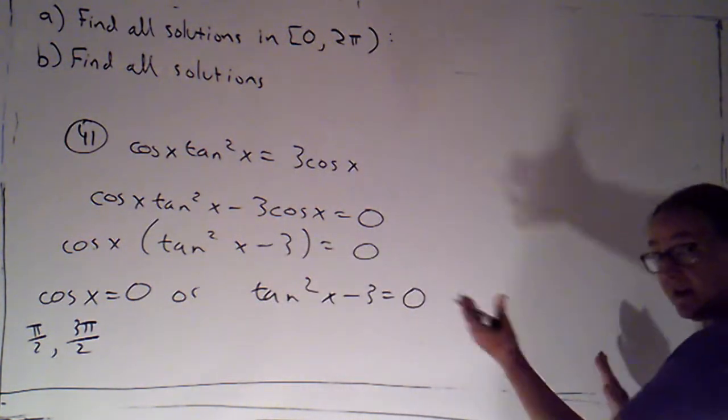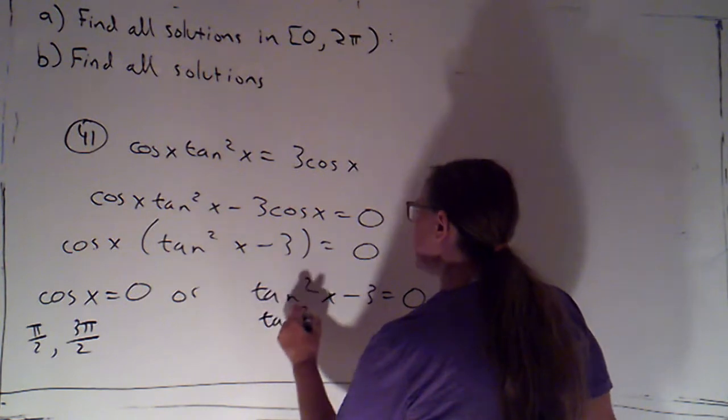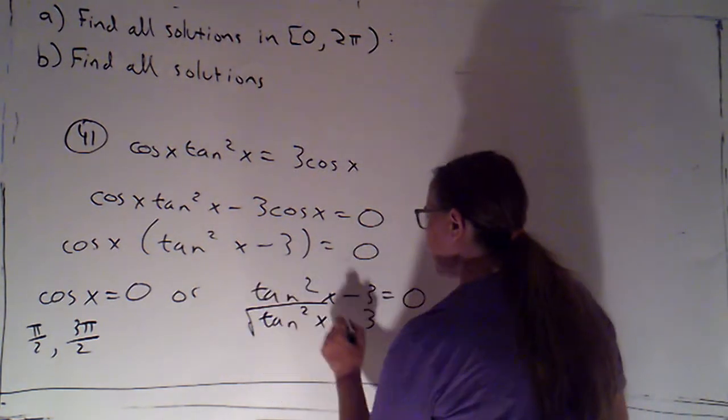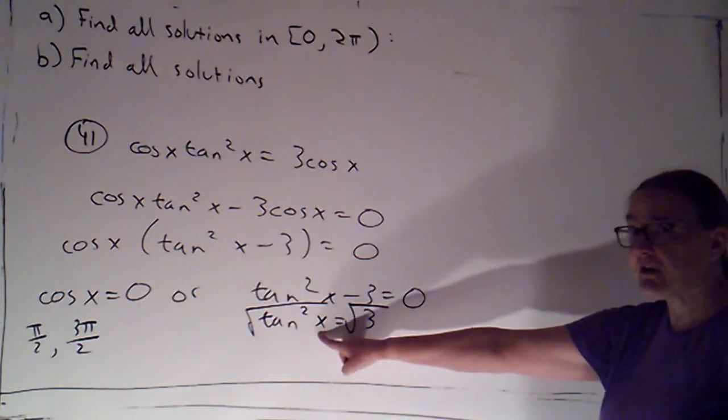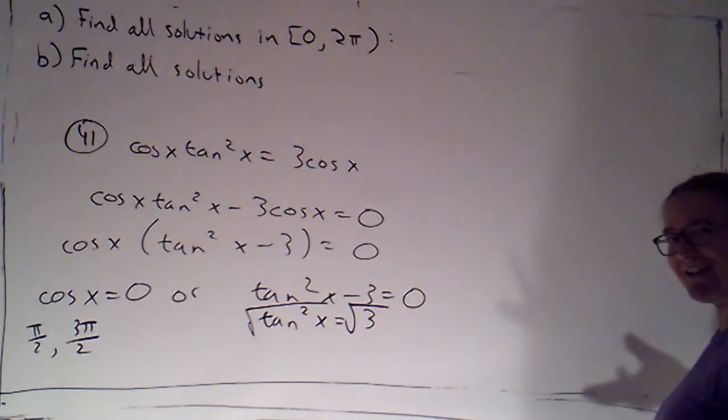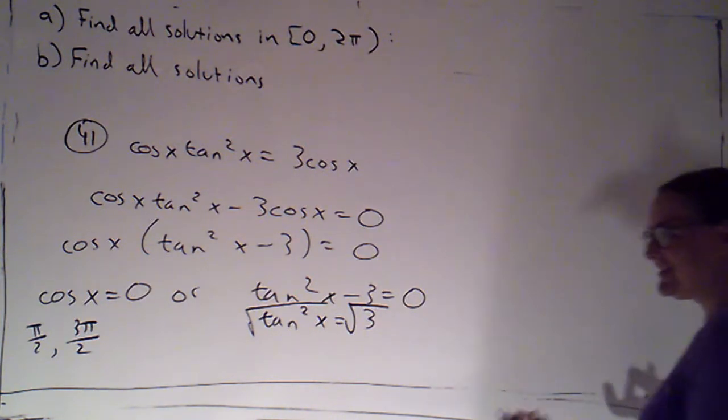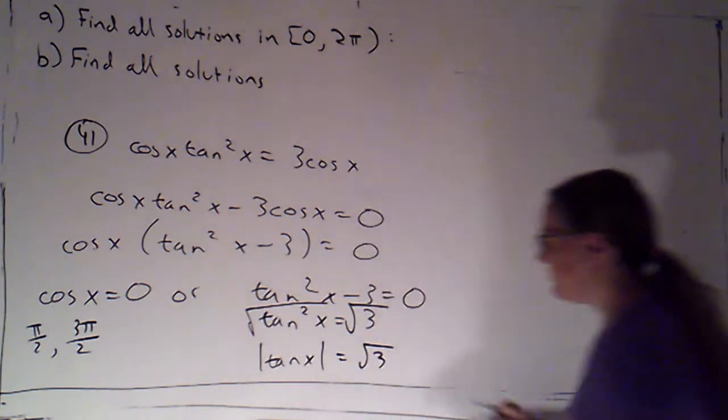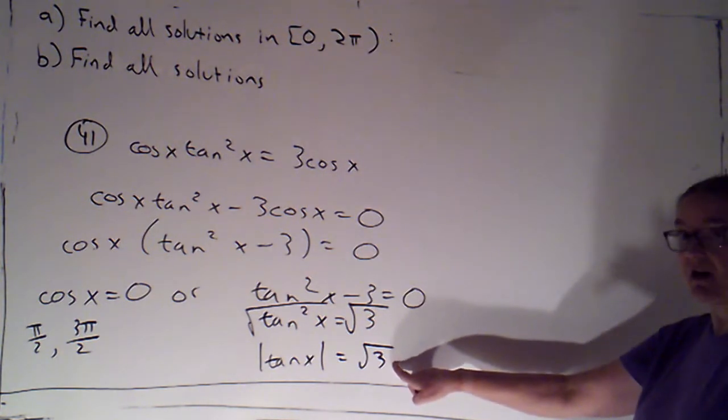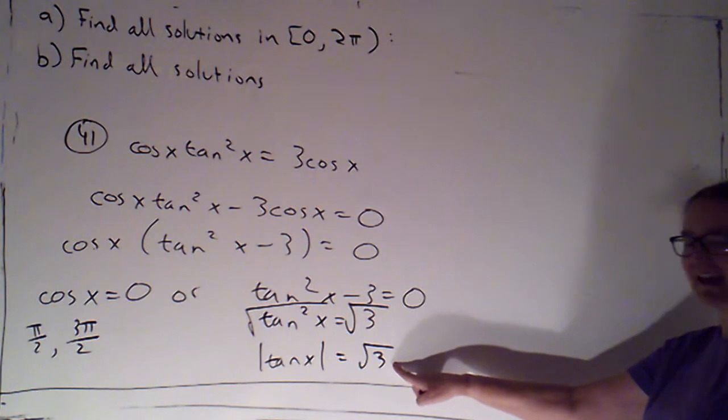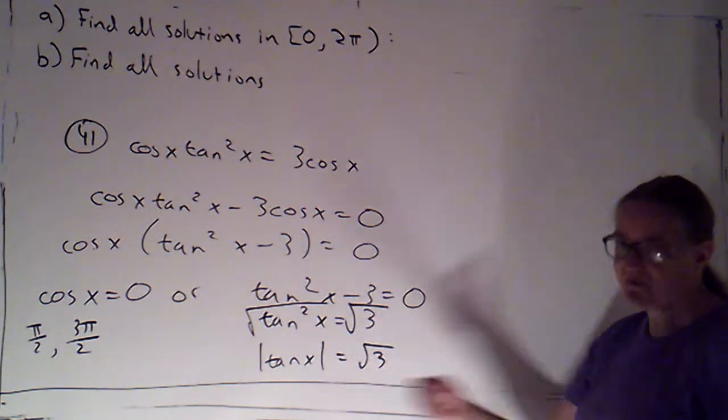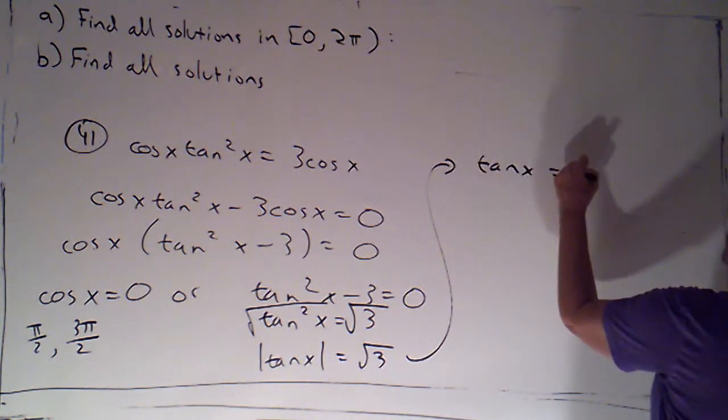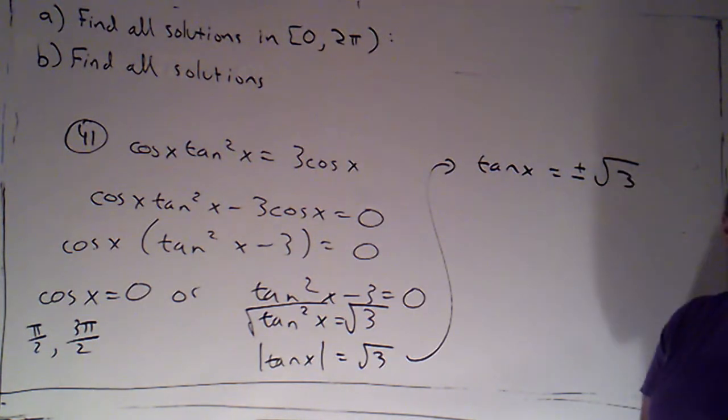Well, I could have factored it as I showed you. I could also say this means that tangent squared x equals 3. And then I can just take the square root of both sides. I just have to be super careful and remember that the square root of tangent squared isn't just tangent. It's the absolute value of tangent. Because root 3 is a positive number. Tangent is sometimes positive and sometimes negative. But the absolute value of tangent will never be negative. This means then that tangent of x is plus or minus root 3.